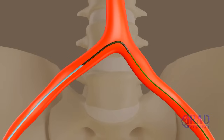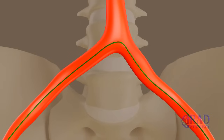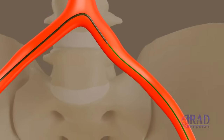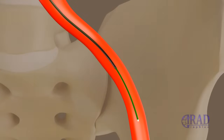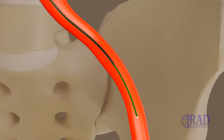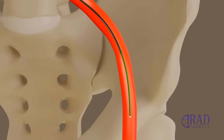Subsequently, the curved catheter is exchanged for an angled catheter. The combination of angled catheter and wire is advanced to the distal contralateral femoral artery.